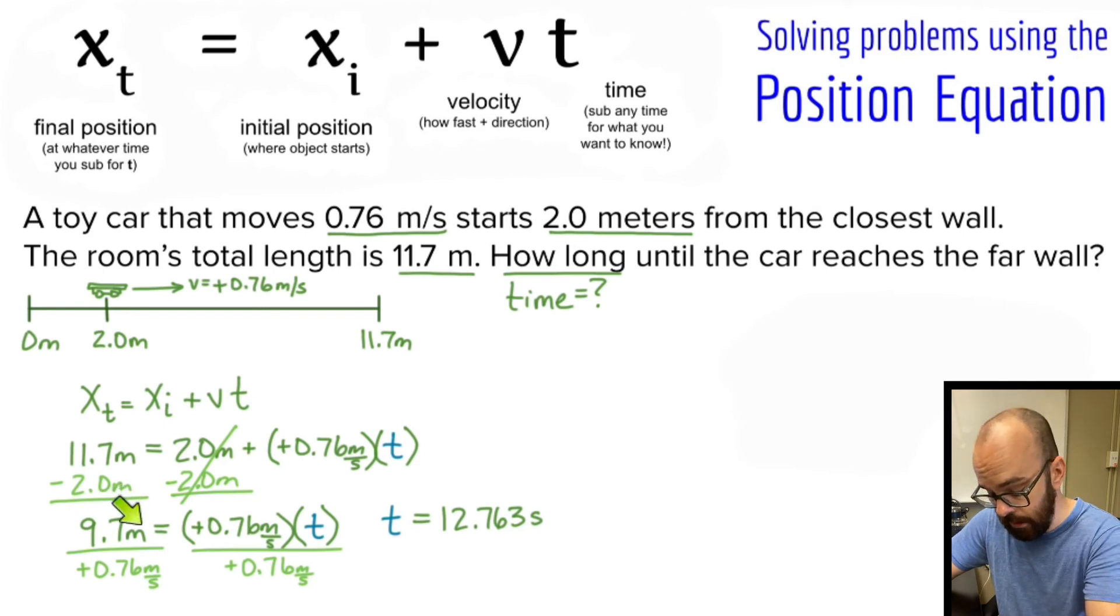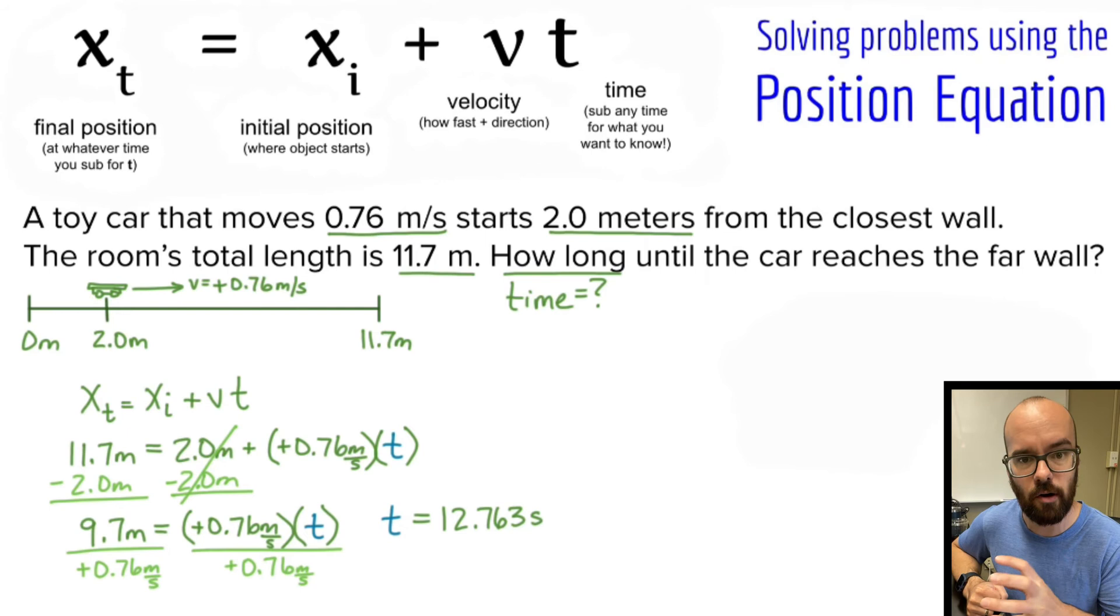My units do work out. The meters will divide out with meters. The seconds will move to the top here because it's on the denominator. And it's important that the units do work out. If this was in meters and this was in centimeters per second, I can't just divide those. I would need to convert those units so they're in the same units. So just always double-check, make sure that the units are going to work out. If you've got something in meters and something in centimeters or something like that, you're going to have to convert.